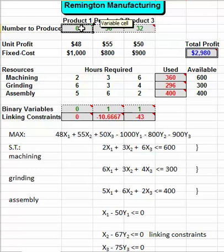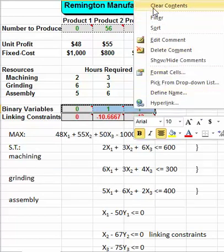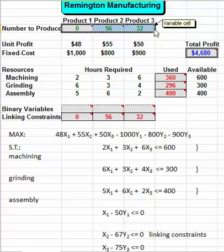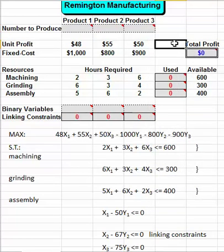These will be empty in the beginning, so let's clear the contents of these. Okay, so I've already filled this table out. We have our hours required for each product.